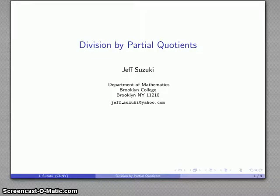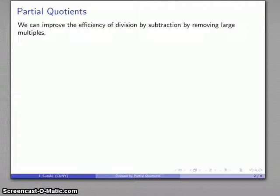So our path to the standard algorithm comes through an area that we might call division by partial quotients. This is essentially just an improvement on our division by repeated subtraction, and we can improve the efficiency by removing large multiples of our divisor.